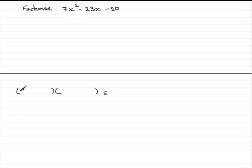So what's that going to be? Well, it's got to be a 7x and an x. 7x times x gives us the 7x squared. You could have x and 7x, it doesn't matter which way round you have these.